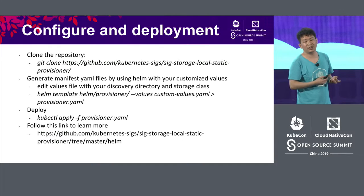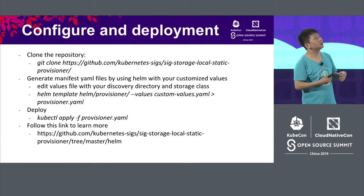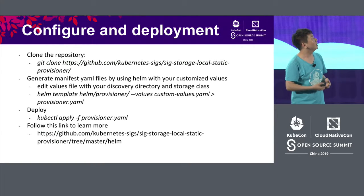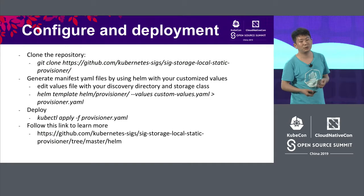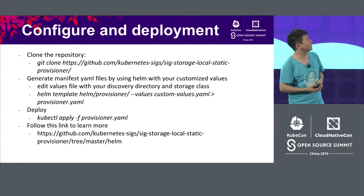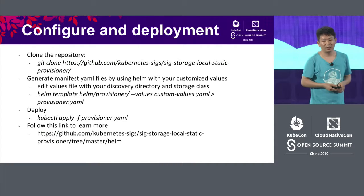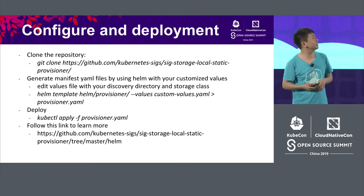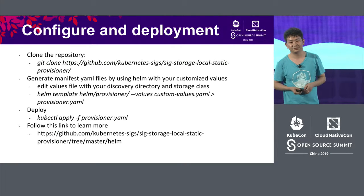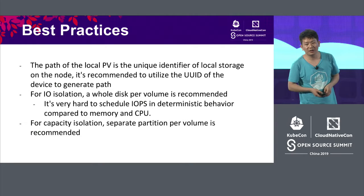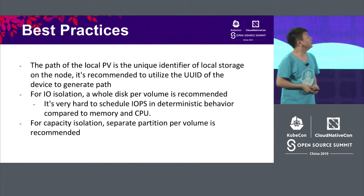In this project, we have Helm support, and it is simple to use. You can do data cloning and generate manifest YAML files by using Helm with your customized values. Edit the values file with your directory and storage class settings, then do the deployment. Follow this link to get more information.